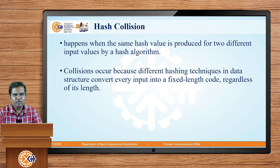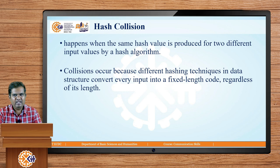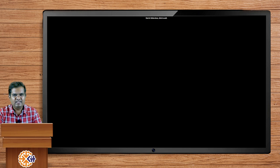The next topic is hash collision. Whenever the same hash value is produced for two different input values by the hash algorithm, that situation is called a hash collision. Hash collision occurs when two different values give the same hash value using the same hash function. This kind of situation is normal because different hashing techniques convert every input into a fixed-length code regardless of its length. There are different ways to avoid collision, which we will cover in the next lecture. Thank you.